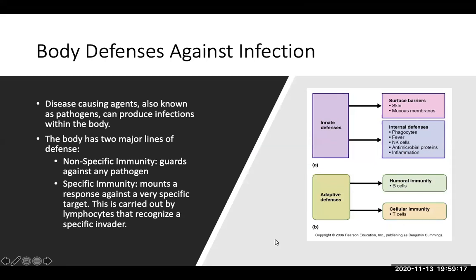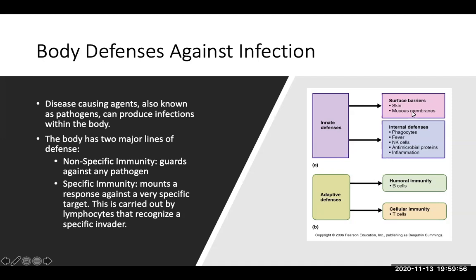Body defenses against infection: disease-causing agents, also known as pathogens, can produce infections within the body. The body has two major lines of defense. Nonspecific immunity guards against any pathogen, and specific immunity mounts a response against a very specific target, carried out by lymphocytes that recognize a specific invader. We also divide body defenses into innate and adaptive. Innate defenses have been with you since you were born, including surface barriers like skin and mucous membranes, and internal defenses such as phagocytes, fever, natural killer cells, antimicrobial proteins, and inflammation. Adaptive defenses include humoral immunity involving B cells, and cellular immunity involving T cells.